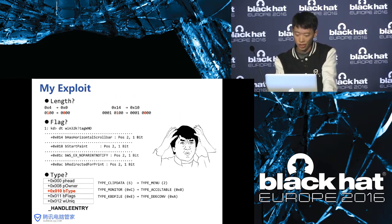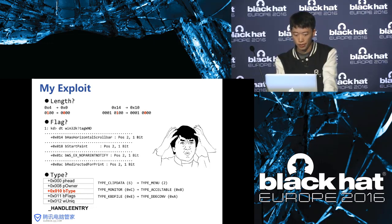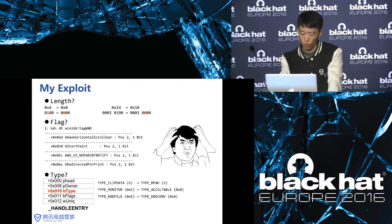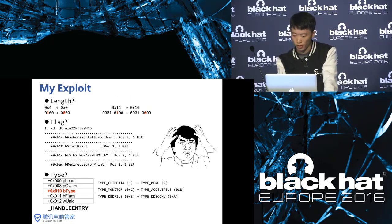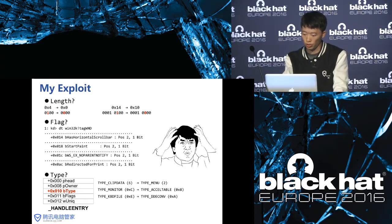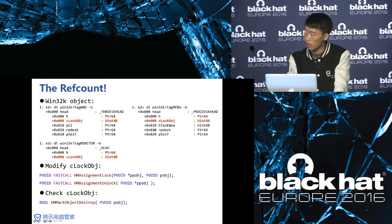Let's look at g-shared info again. In the handle entry structure, at offset hex 10, there is a B-type field showing the type of object pointed to by p-head. If it is 6, the object is clip data. If it is hex C, the object is a monitor. If we remove the bit for 4 from 6, turning it to 2, we force the clip data object to be treated as a menu object. So we have a type confusion vulnerability. We can control the pointers in the menu object and modify other memory. It sounds good — and I actually wrote a whole exploit based on this technique. However, this is not a general solution. What if we need to modify position zero or position three?